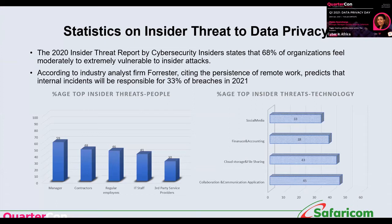41% of insider threats are caused by IT admin and staff — the techies who handle controls. They may not deploy or configure systems correctly, or they may fail to implement best practices like proper password management — how long passwords should be and how often they should be changed. These admin staff can also create backdoors in systems or fail to do quality assurance, leaving bugs that others can exploit.